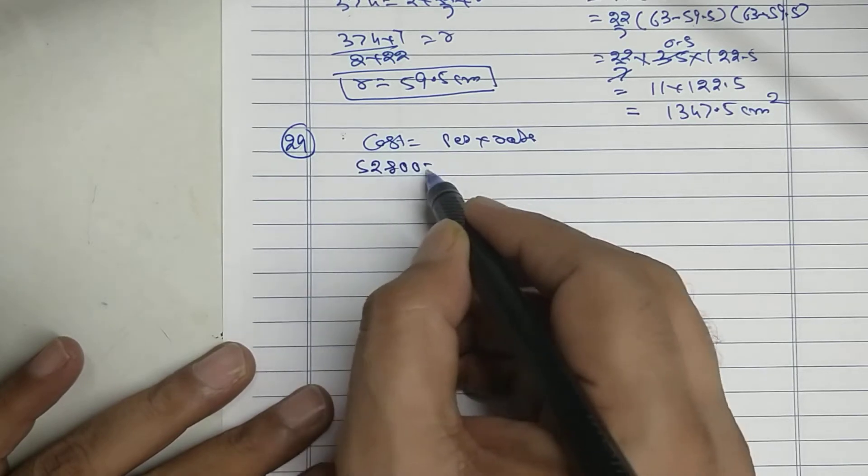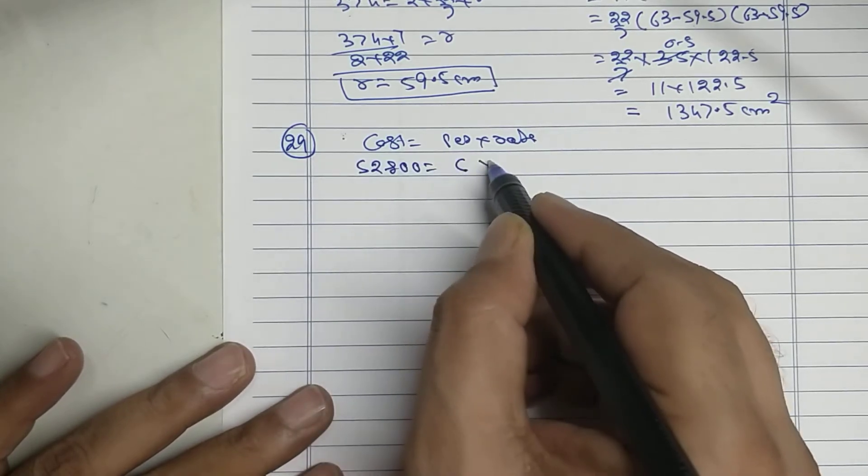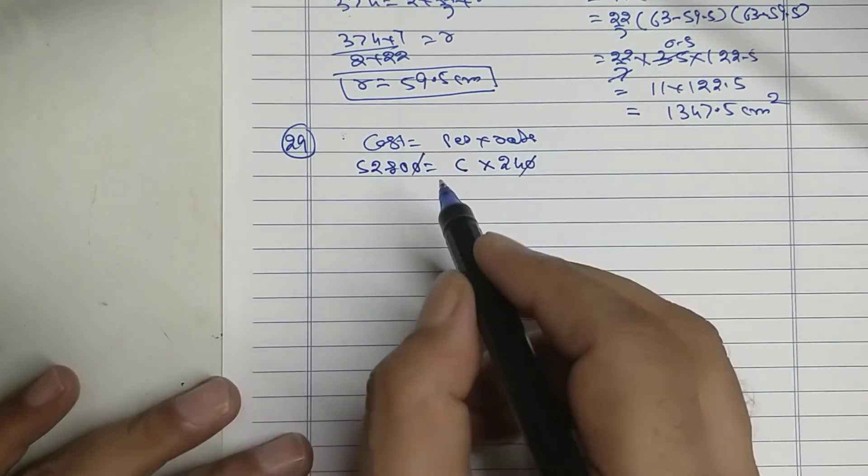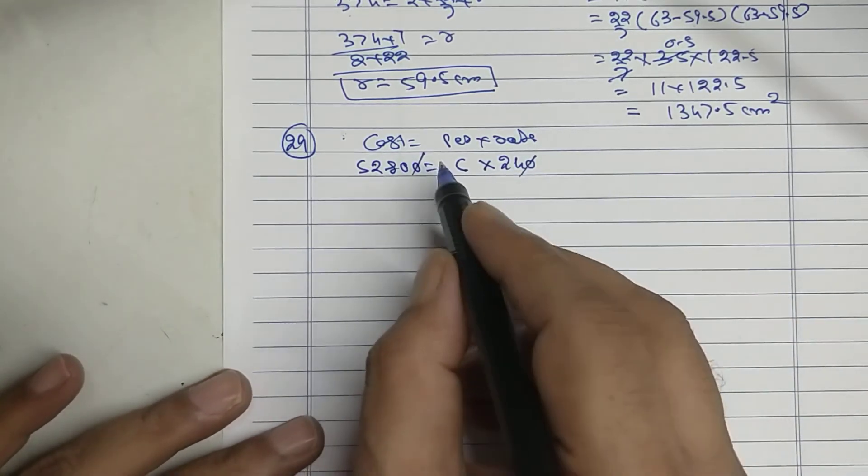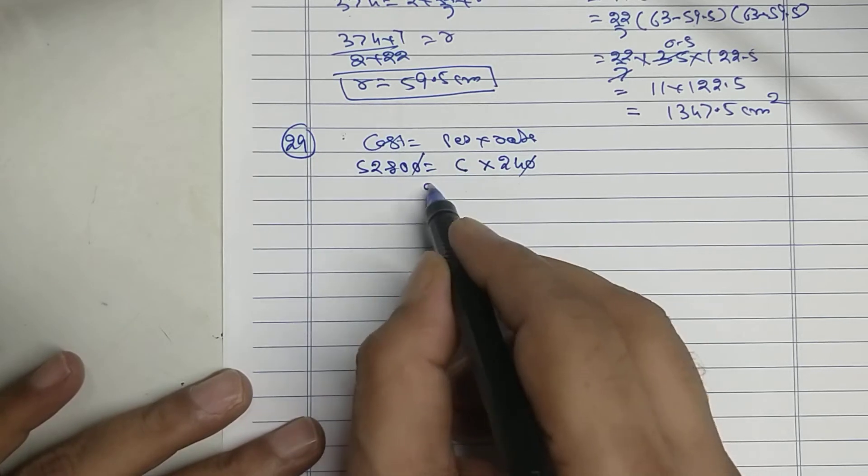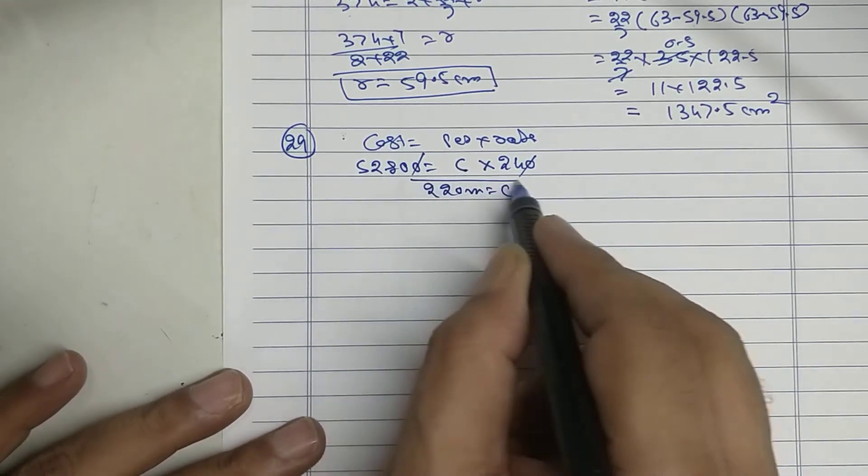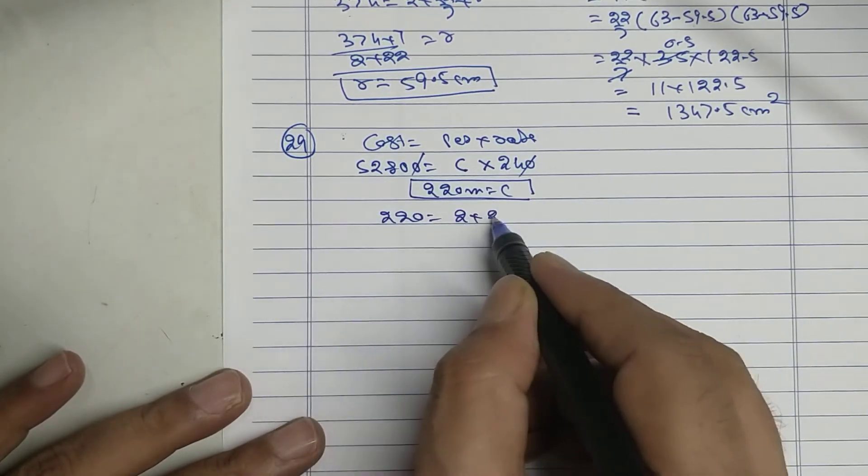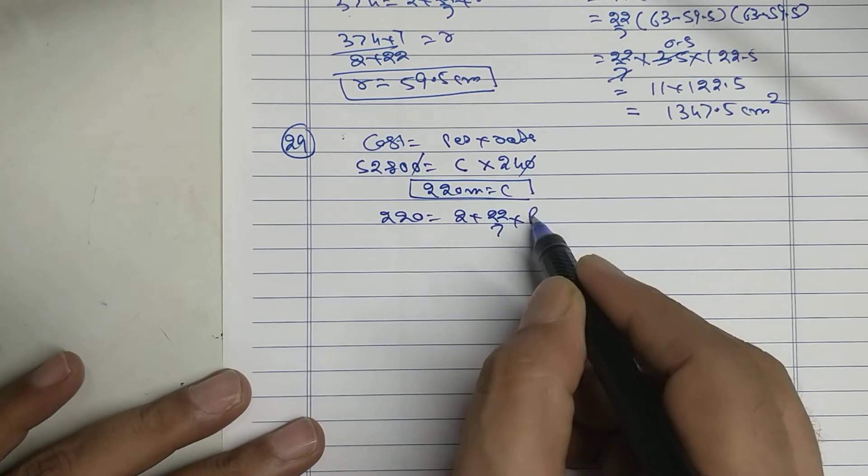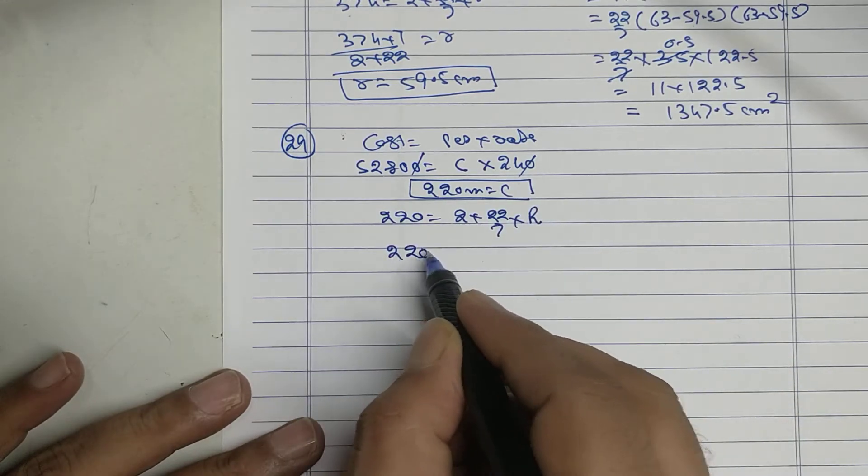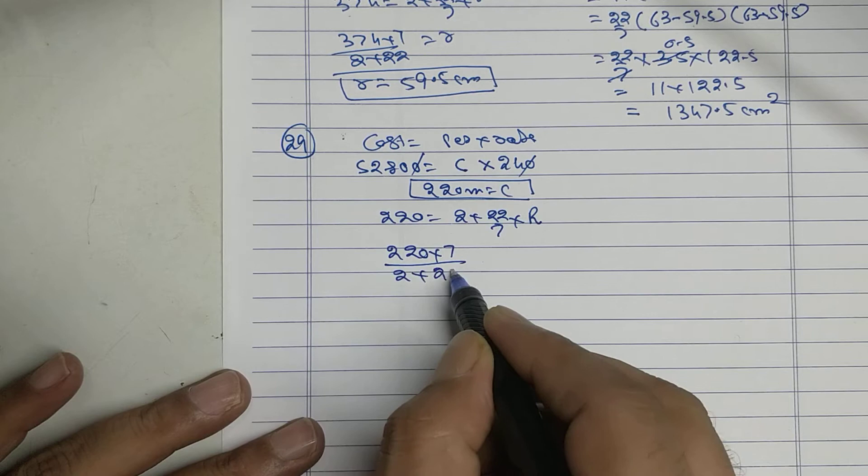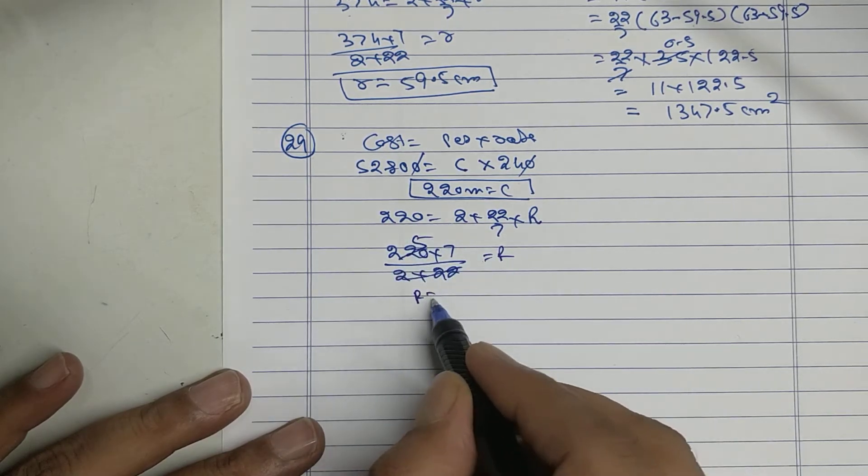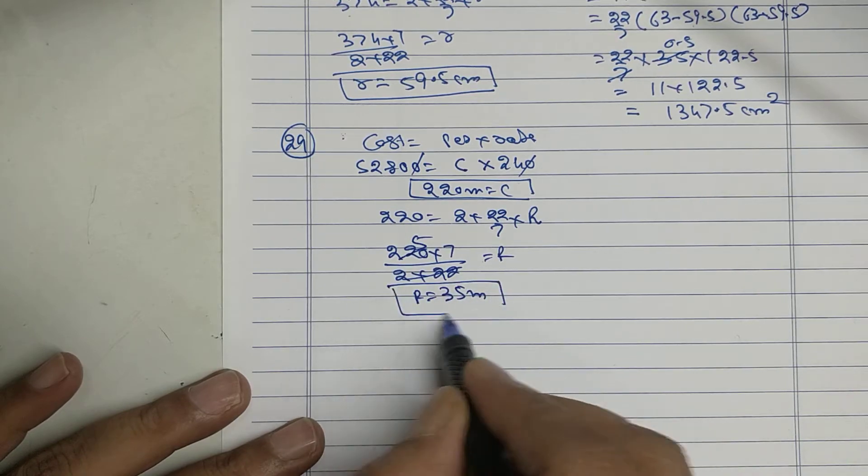52,800. Perimeter means circumference, rate is given 240. So 220 meter equal to circumference. 220 equal to 2 into 22 upon 7 into r. Equal to r. R equal to 35 meter.